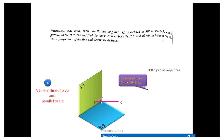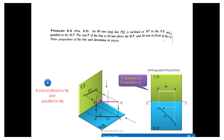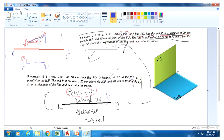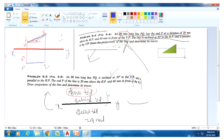In this case phi equals 30 degrees. Observe from the top and you get the true length on the HP plane — so the true length is the top view. Observe from the front position and you get the front view. To draw the front view, just project P and Q like this. This is the complete answer and concept.